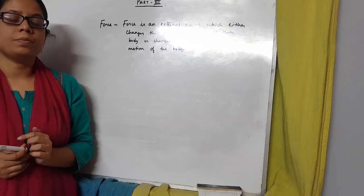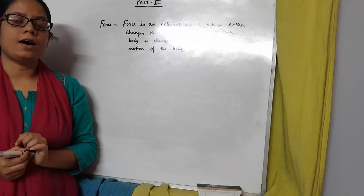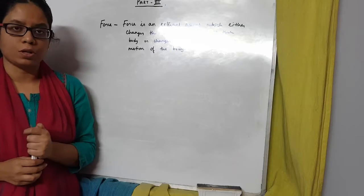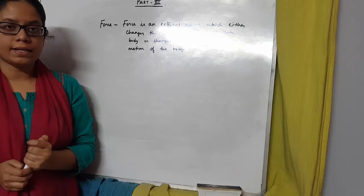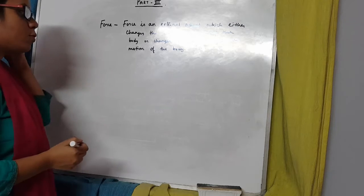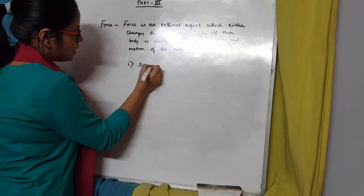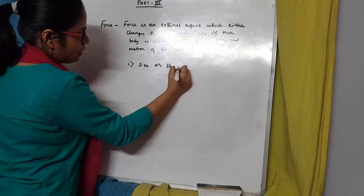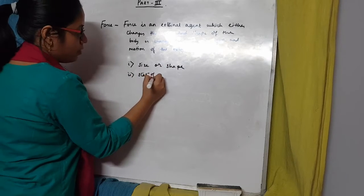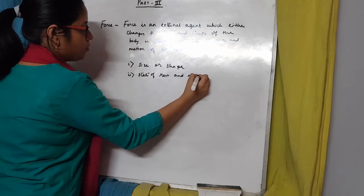If a ball is lying on the ground stationary, what a force does is it gives motion to the body. The effects of force can be written as: either it can change the size or shape of the body, or it can change the state of rest and motion of the body.